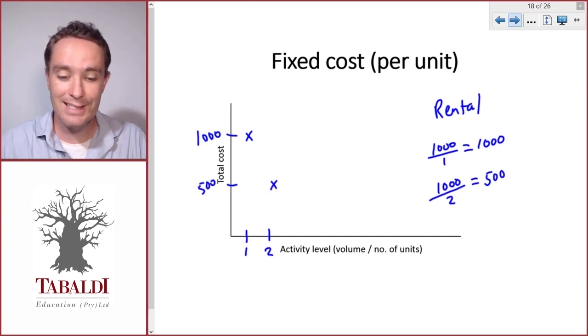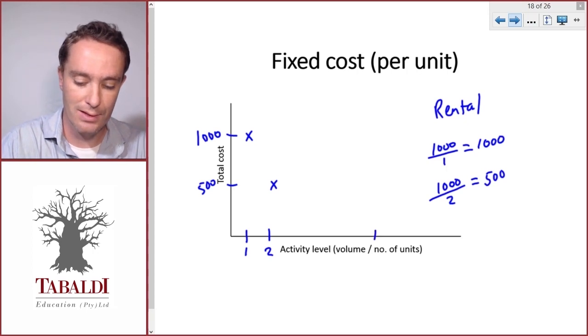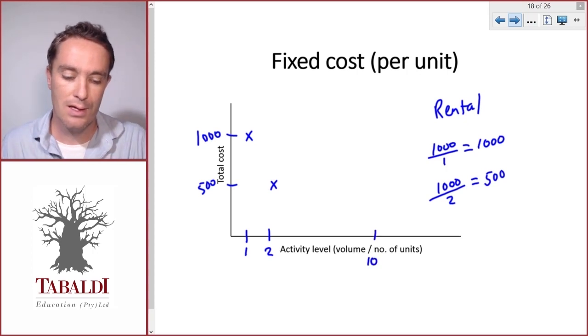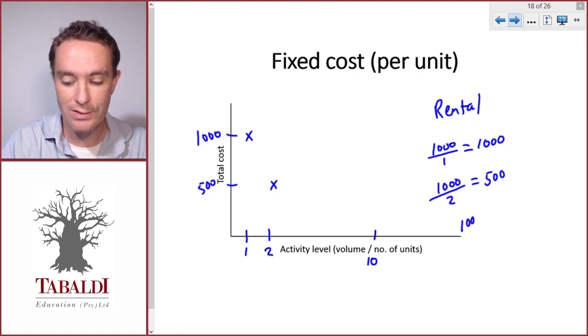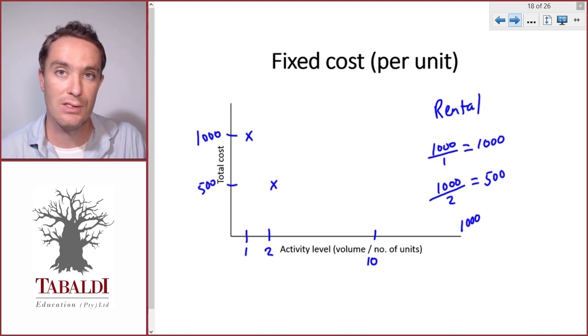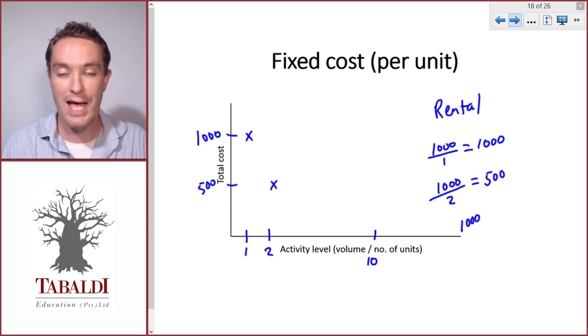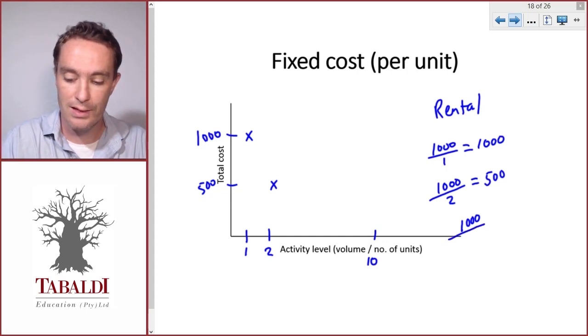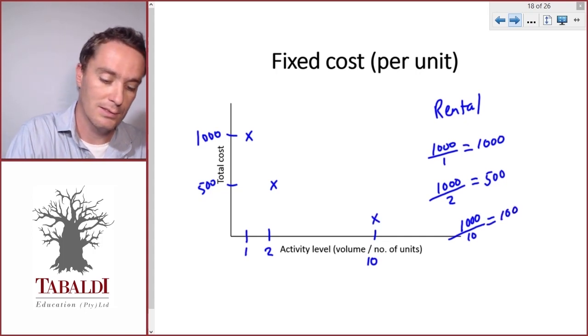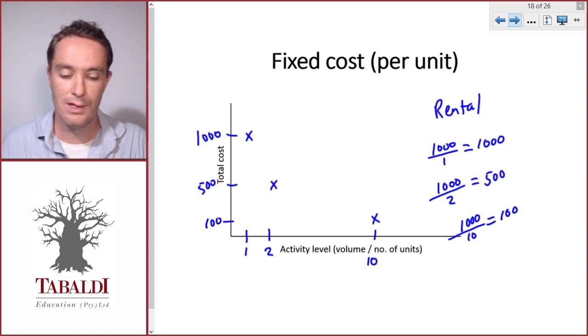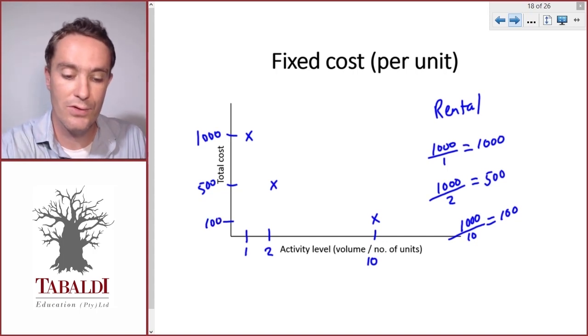Now what if we make ten tables in a specific month? So our total rental for that month would still only be a thousand. Remember, it's a fixed cost, it stays the same as per the rental agreement. So on a per unit basis, that would give us a hundred per table. So if we draw a line through these points...